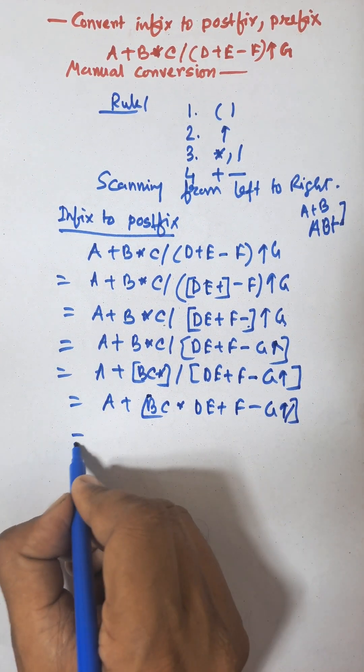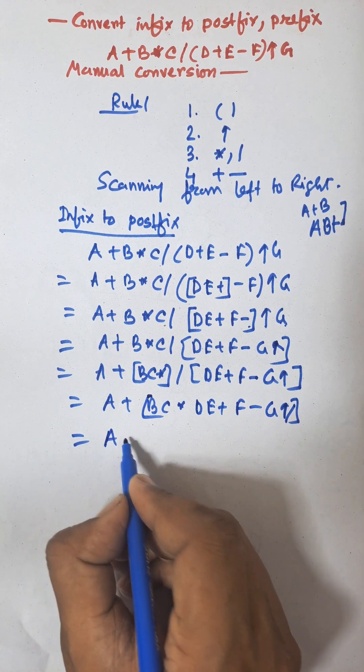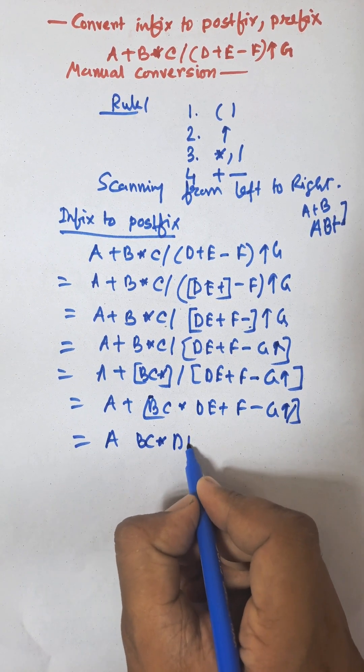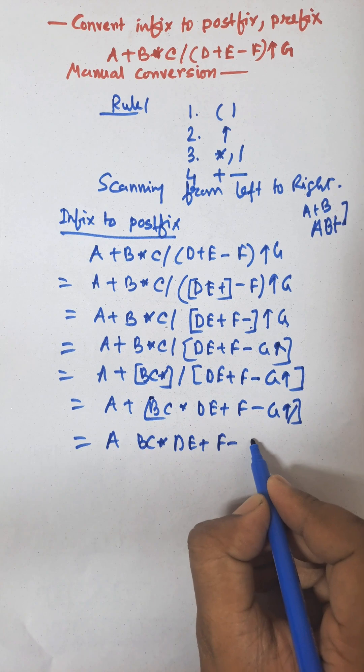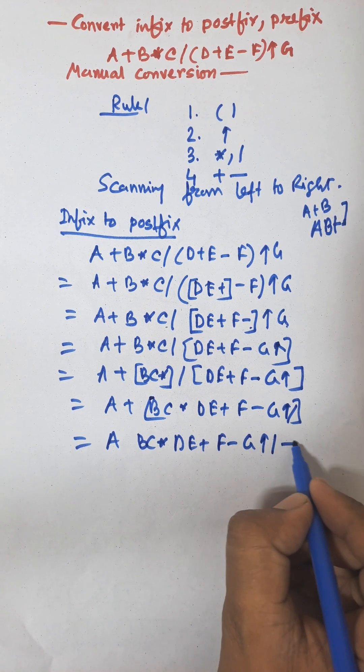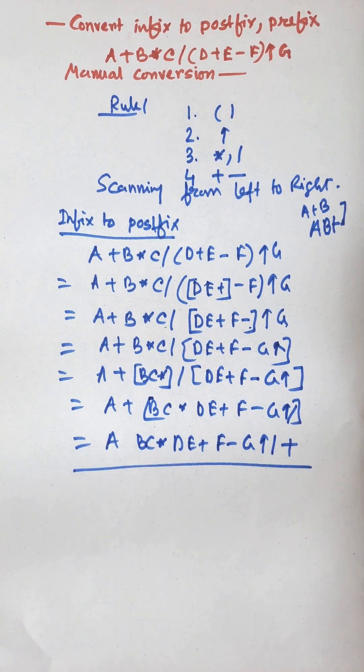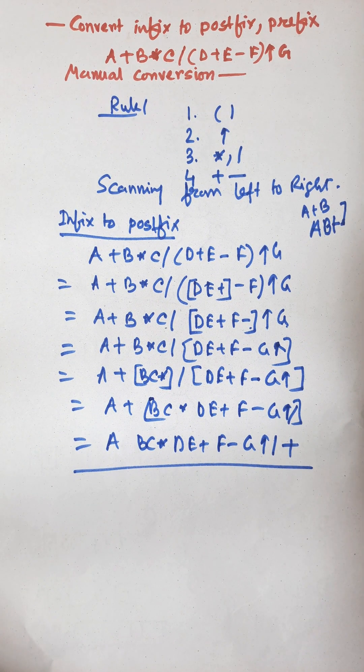Now last operation is plus. So that will be A, B C into D E plus F minus G exponential division and plus. So this is the infix to postfix conversion of the given expression.